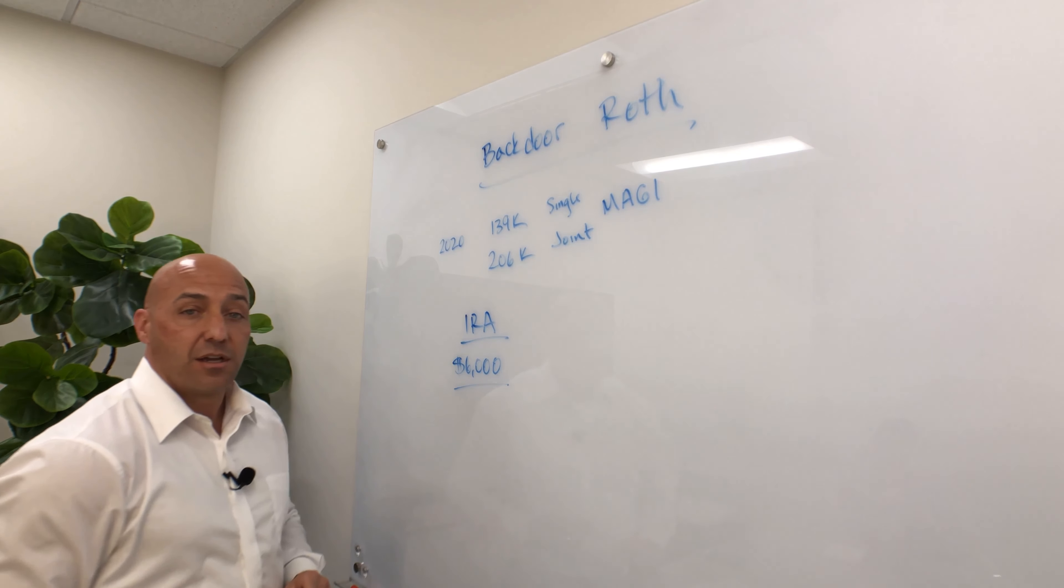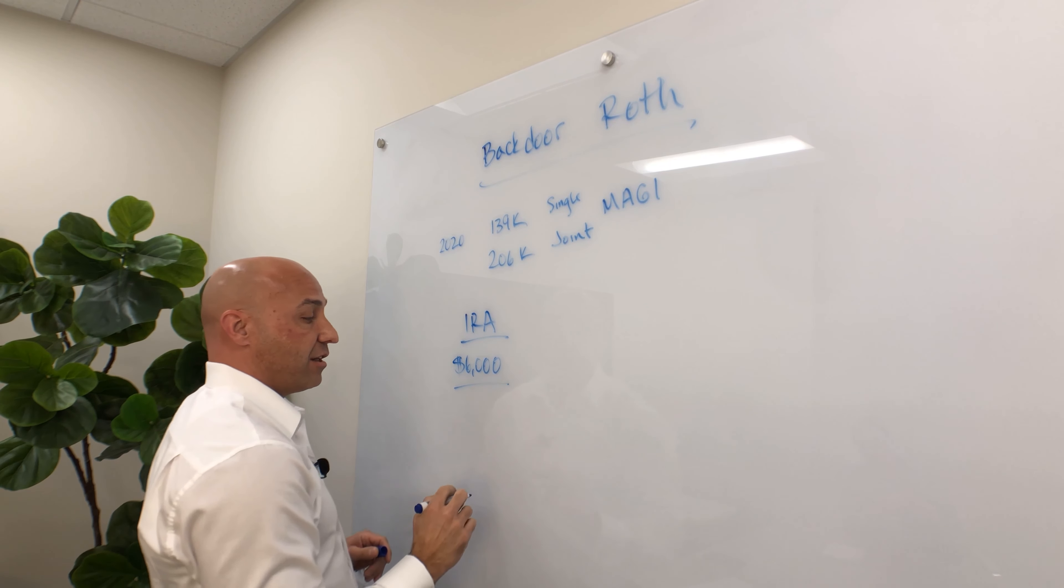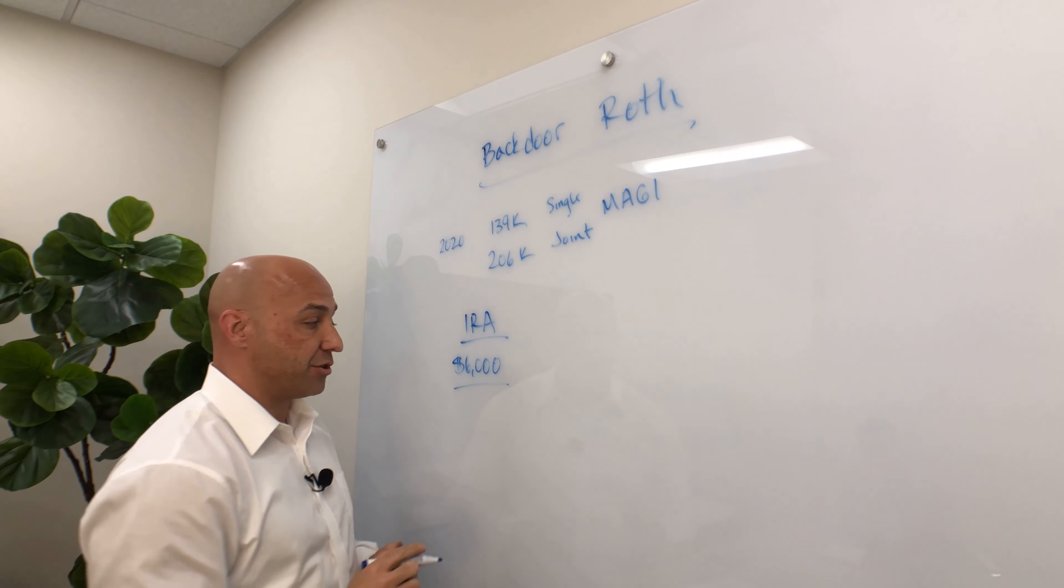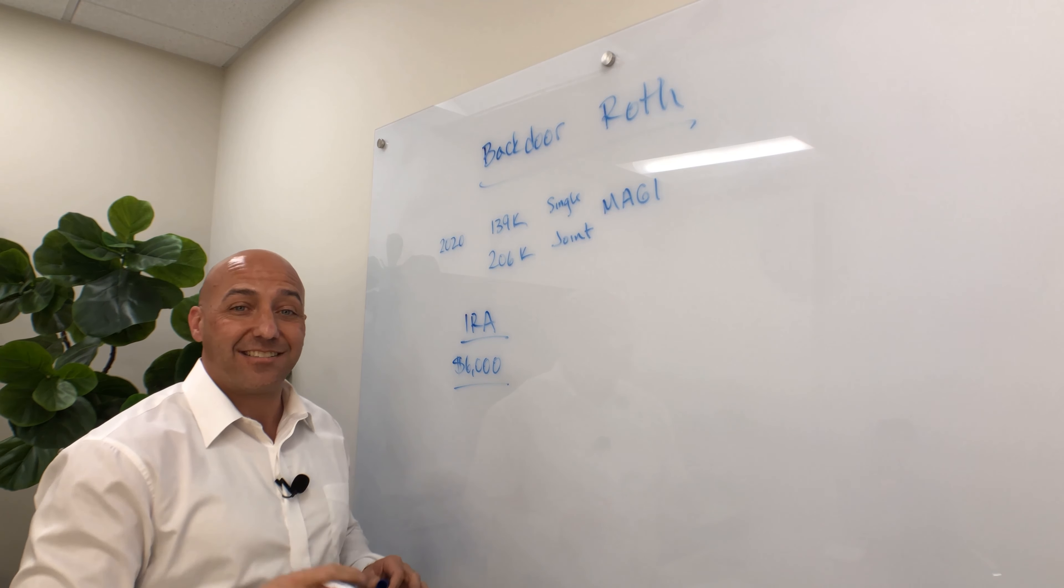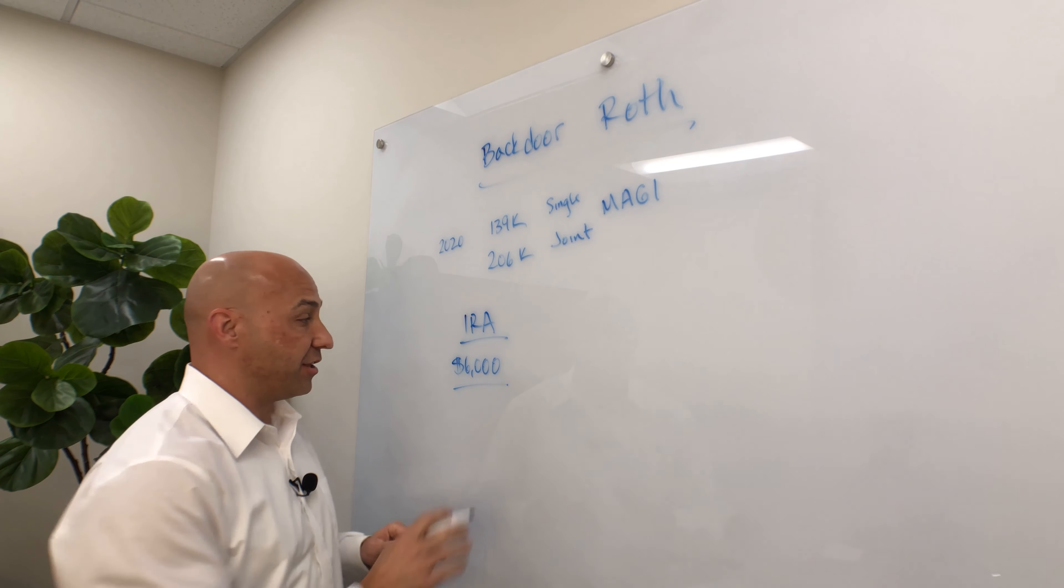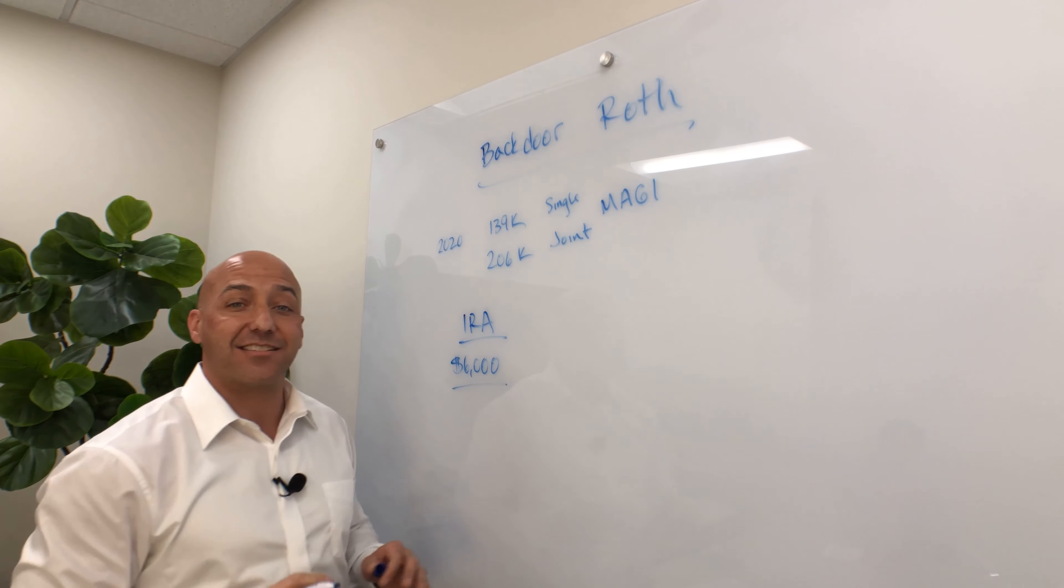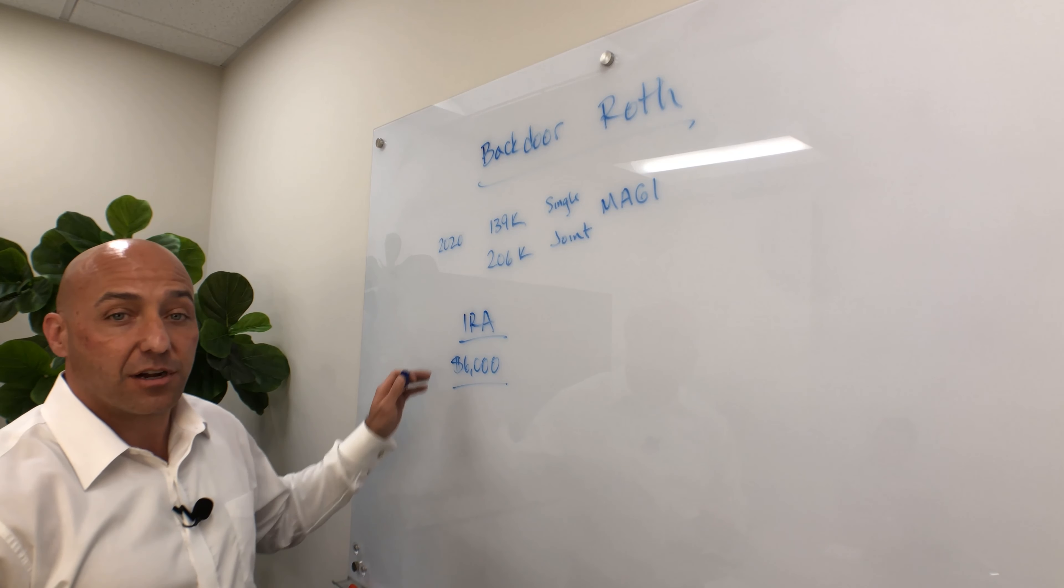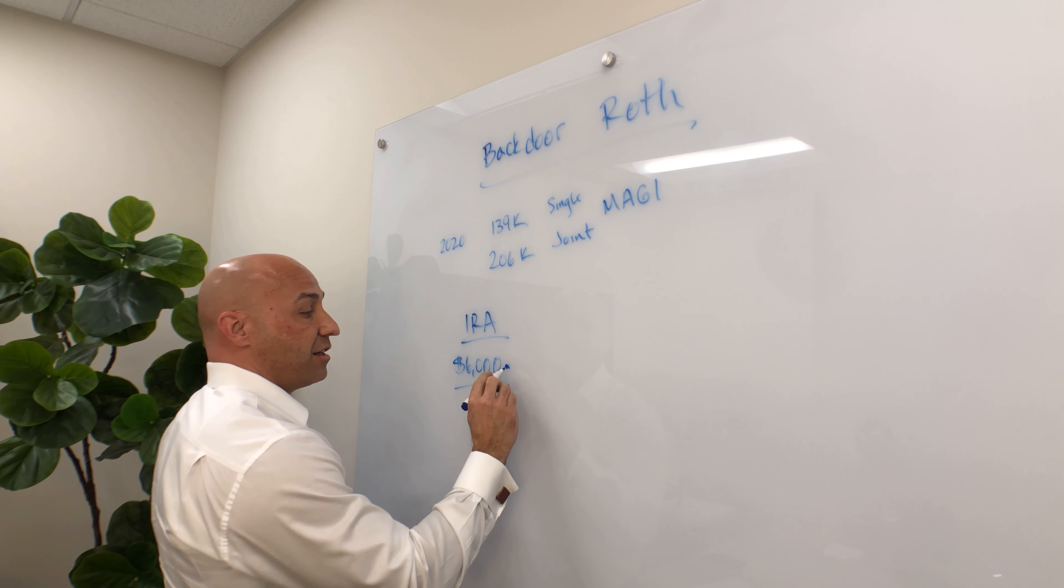So let's say you make a contribution of $6,000 to your traditional IRA. And then what you do is you claim this $6,000 as a non-deductible IRA contribution. And so you want to discuss this with your accountant. There's a Form 8606 that he's going to file to show that this contribution was non-deductible and you do not take a tax deduction for that IRA contribution.